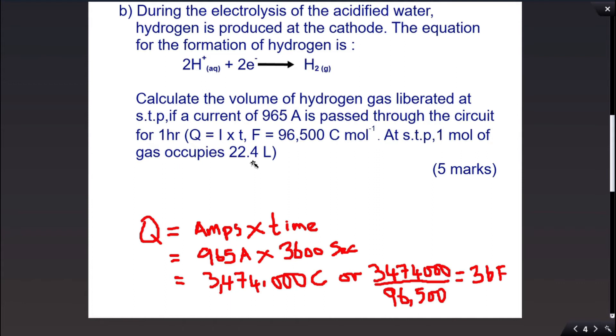So let us see what we have. First we need to find the quantity of electricity, which is given as amperes multiplied by time. Time is usually given in seconds. However, we have one hour here so we need to convert that hour to seconds. So 60 multiplied by 60 gives us 3600 seconds, then that is multiplied by 965 amperes, which produces 3,474,000 coulombs.